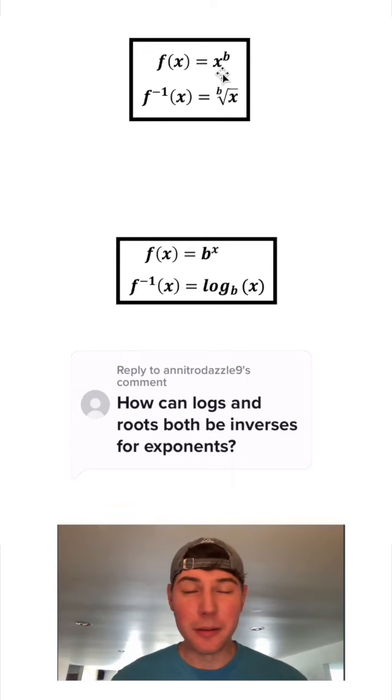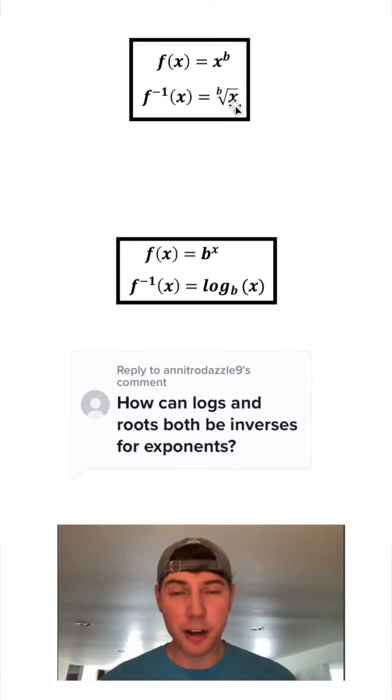Right here. If your variable is the base, like x to the 3 or x to the 4, the inverse would be the cube root or the fourth root. Ultimately you would use a radical if the exponent was constant and the base was a variable.